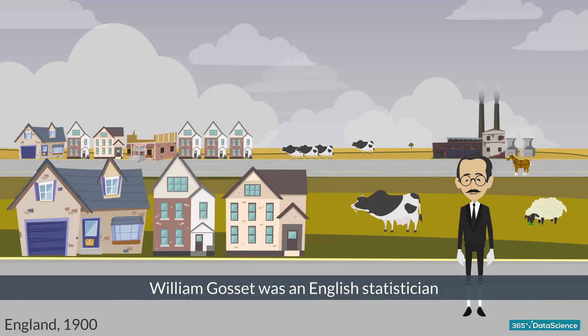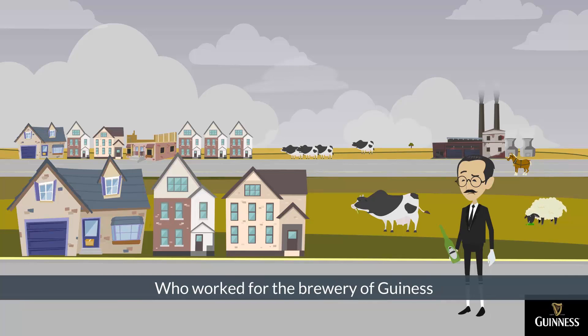William Gossett was an English statistician who worked for the brewery of Guinness. He developed different methods for the selection of the best yielding varieties of barley, an important ingredient when making beer.